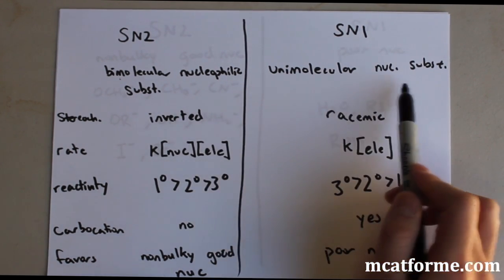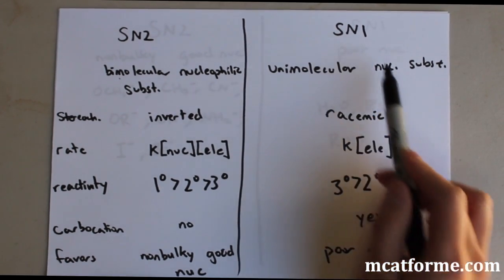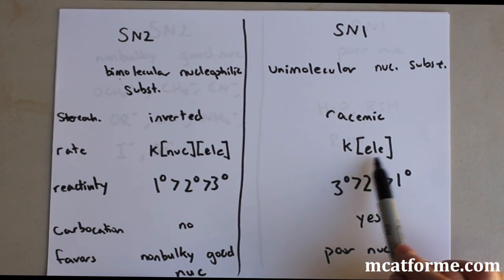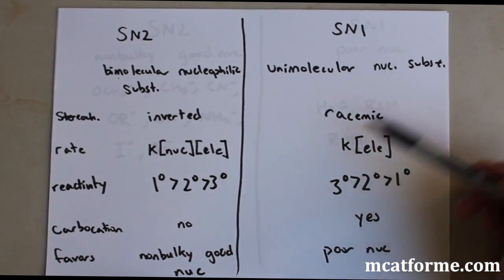Versus the unimolecular nucleophilic substitution, which is SN1, only depends on the concentration of the electrophile. So, that's the importance of these names right here.